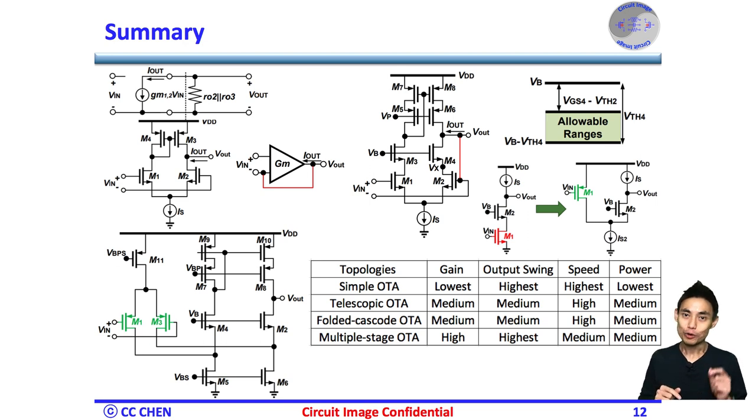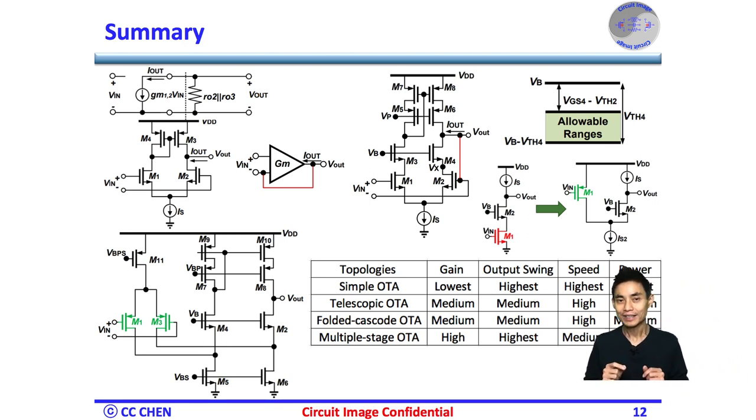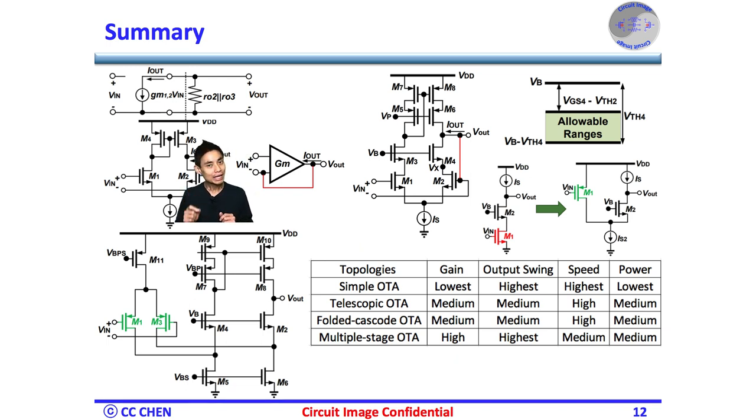Here are the summary diagrams of why you would prefer the folded cascode OTA. The simple OTA may not meet the gain requirement and then telescopic OTA would be used to achieve a high gain application. But with an output high swing requirement, the telescopic OTA may not apply. Therefore, the folded cascode OTA would mitigate the swing constraint a bit and keep telescopic OTA high gain properly with a little higher current. So, to maximize the swing ability, a multiple-stage simple OTA would achieve high gain and highest swing at the same time. But operation speed is limited with a big design effort.